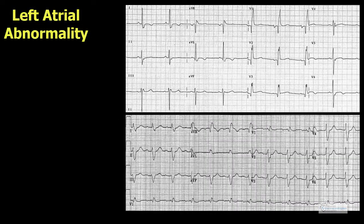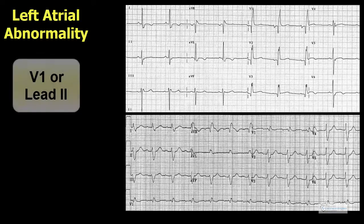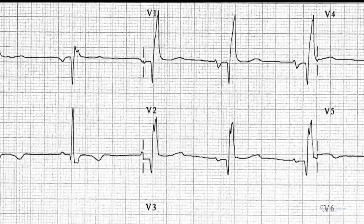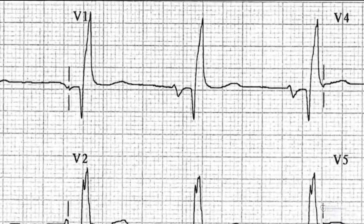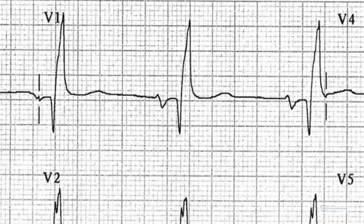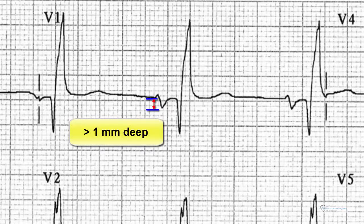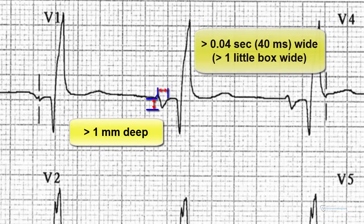In this set of electrocardiograms, we will be looking at left atrial abnormality. To determine left atrial abnormality, we simply look at leads V1 or lead 2. In V1, as in this electrocardiogram, the P wave may be greater than one little box deep and one little box wide.